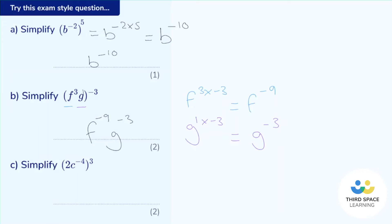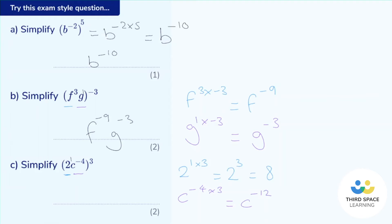Part C is very similar, but this time we've got a number in there as well. The two is actually two to the power of one. Starting with the two: it's two to the power of one, and we multiply that by the power outside the bracket, which is three — one times three is three, so this is two to the power of three, which means two times two times two, which is eight. Now let's look at the c: c to the power of negative four, multiplied by three — negative four times three is negative twelve, so that's c to the power of negative twelve. Putting it all together: 8c to the power of negative twelve.